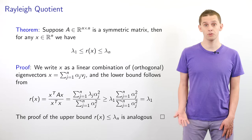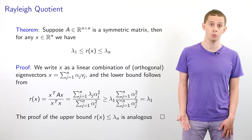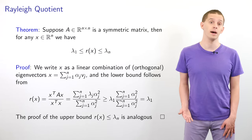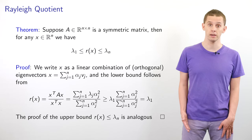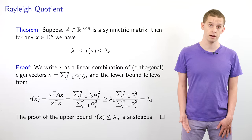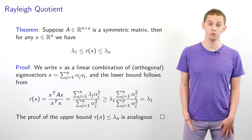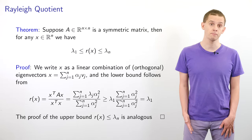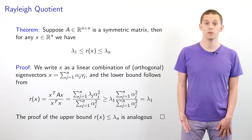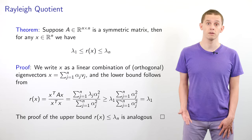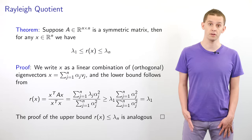Let's now look at a theorem. For our symmetric matrix A, for any vector x, R(x) must lie between lambda 1 and lambda n, where lambda 1 is the smallest eigenvalue and lambda n is the largest. To prove this, we use the fact that A has a full set of orthogonal eigenvectors forming a basis, so any vector x can be written as the sum from j equals 1 to n of alpha j times vj. Looking at R(x) and using orthogonality, we can write it as the sum of lambda j alpha j squared divided by the sum of alpha j squared.